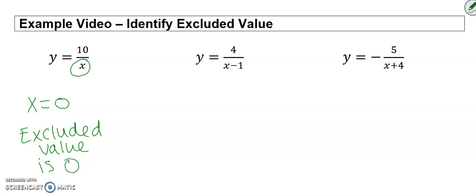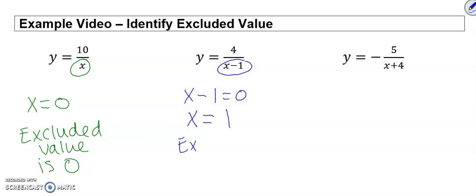Here we're going to set x minus 1 equal to 0, so x minus 1 equals 0. Add 1 to both sides, so x equals 1, so our excluded value is 1.